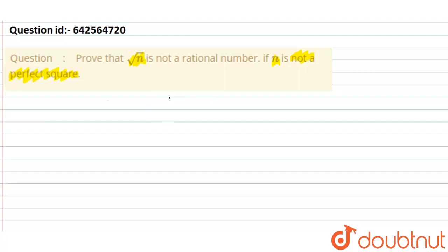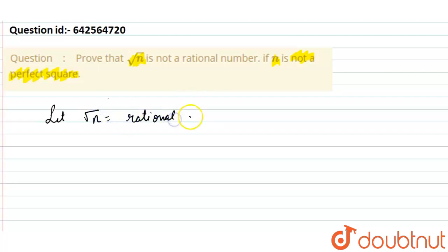I will suppose that √n is a rational number, and it is a perfect square — this is the opposite of what we have to prove. If I prove this wrong, then its opposite will be right. So let us suppose √n is a rational number.